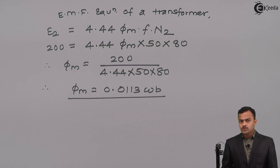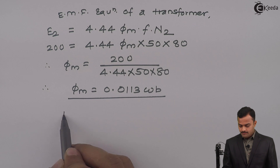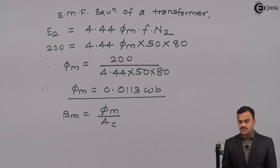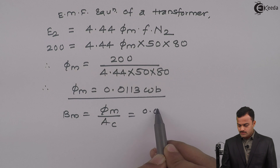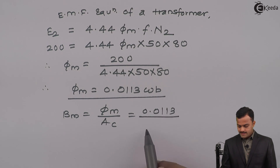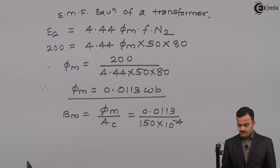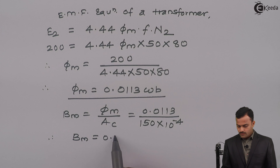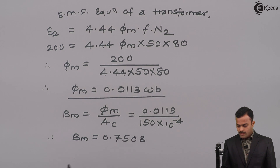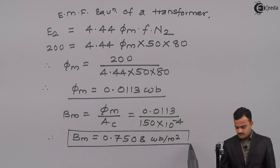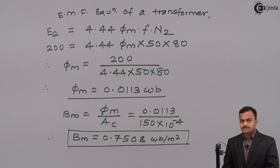We are supposed to find flux density BM. So BM equals flux upon area of cross section. The flux we calculated is 0.0113 and Ac is 150 multiplied by 10 raised to minus 4. Solving, we get BM equal to 0.7508, with units Weber per meter square or Tesla. This is the required answer. Thank you.